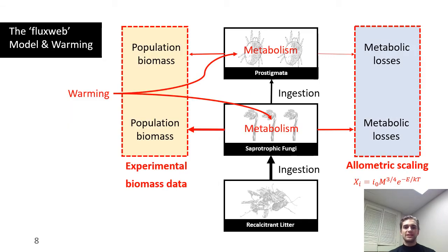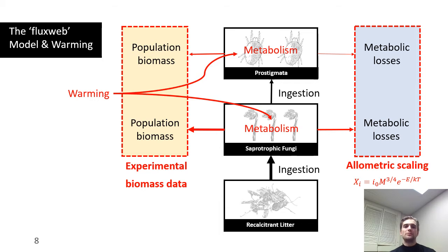The MTE predicts that metabolism will change under warming. We can estimate metabolic losses at any temperature according to the allometric relationship described by the MTE, shown by the equation on the right of this slide in red. These changes in metabolic rate, represented by the blue box on this slide, represent the effects of warming on individuals. We also expect that population biomasses will change under warming as populations may increase or decrease. We can estimate these changes in biomass with experimental data. These changes in biomass, represented by the yellow box on this slide, represent the effect of warming on populations. To examine the whole soil community under warming, which is made up of populations of individuals, we must consider both changes in individuals and in populations.